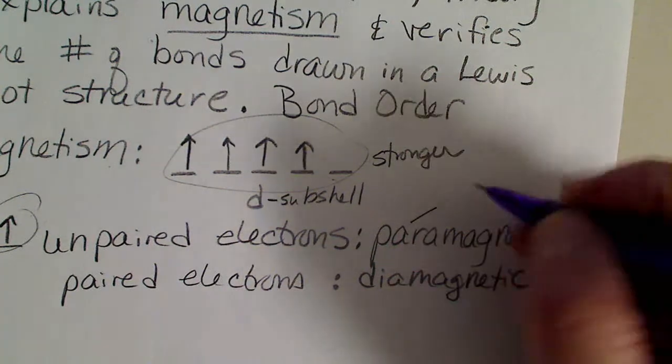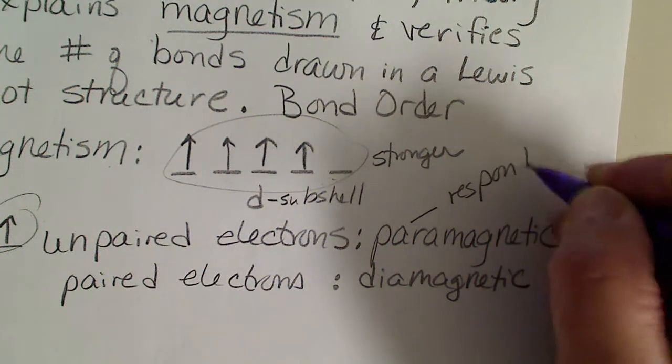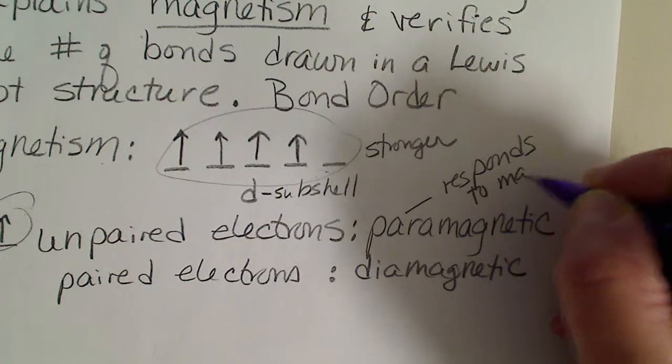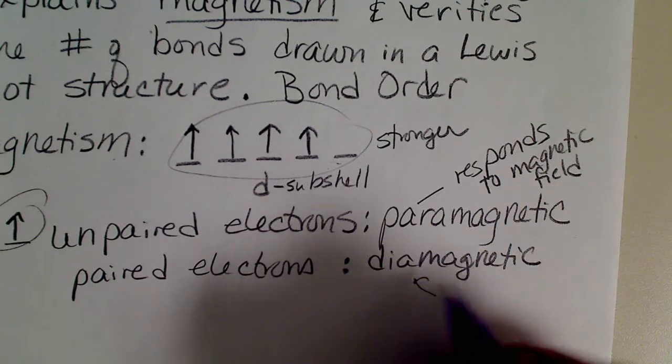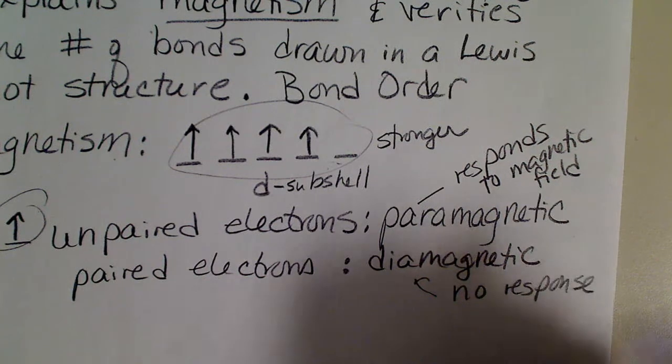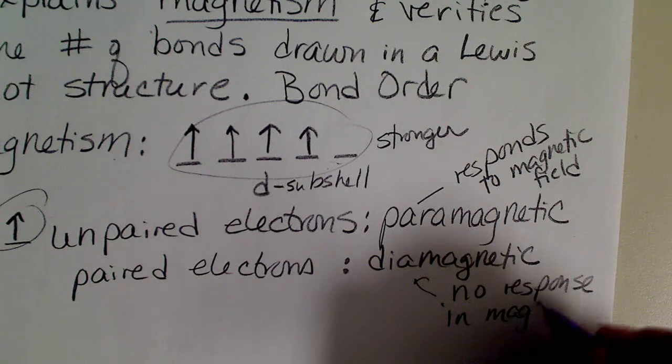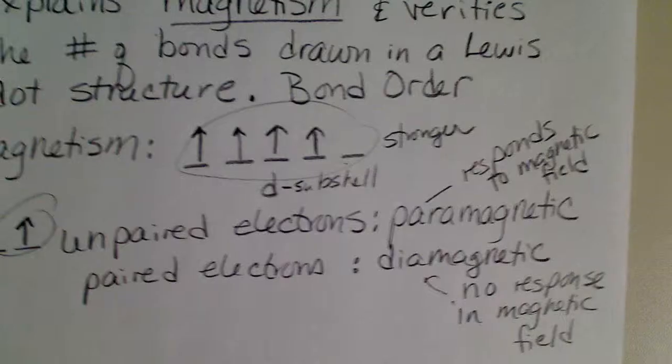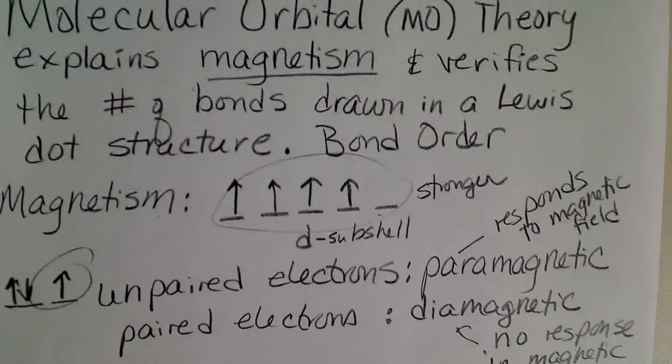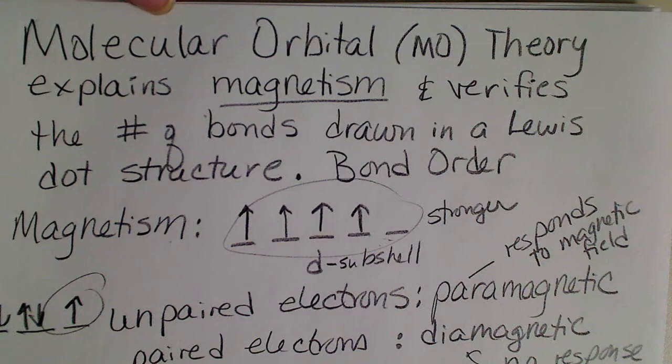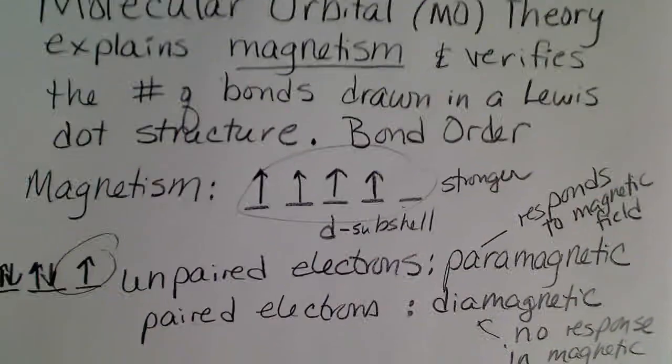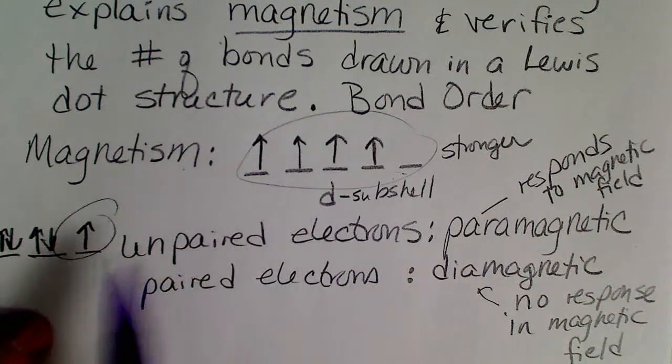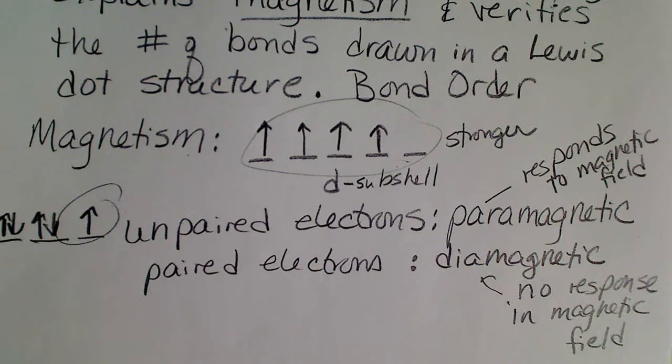Something that's paramagnetic will respond in a magnetic field. Diamagnetic, there would be no response to a magnet. So something diamagnetic would act just like a piece of plastic. Once we've discussed how to build the molecular orbital, which will be based on atomic orbitals, then we will place electrons in the orbitals from low energy to high energy. And then we'll see if our compound is paramagnetic or diamagnetic.